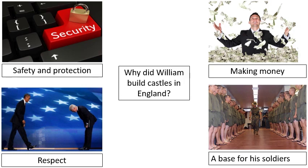The fourth reason is as a base for his soldiers. He was able to have soldiers there, and if he needed them to put down a rebellion in the local area they were close by and could get ready really quickly. He spread his soldiers out across all of the castles, which was a good way to keep control over England.